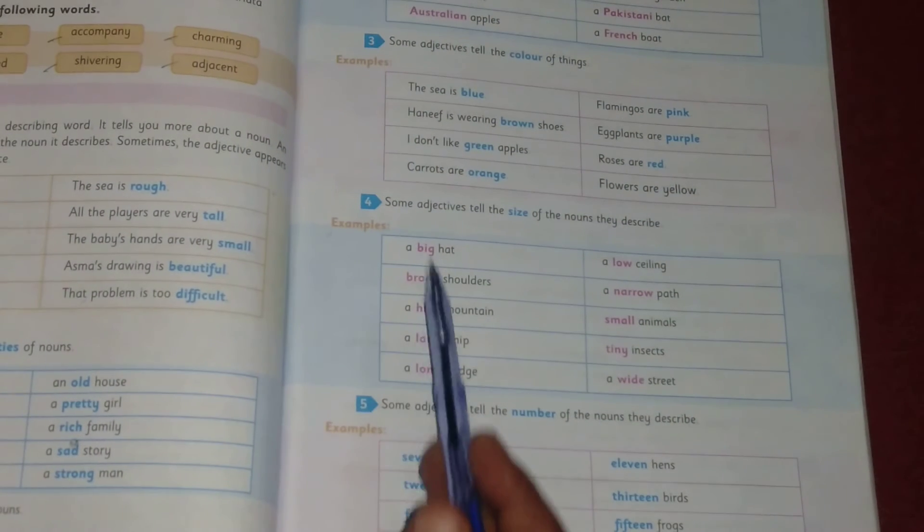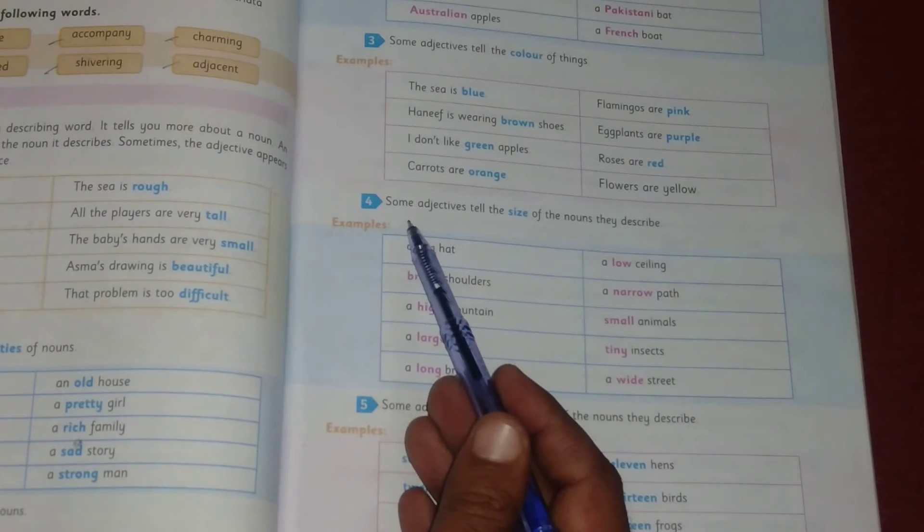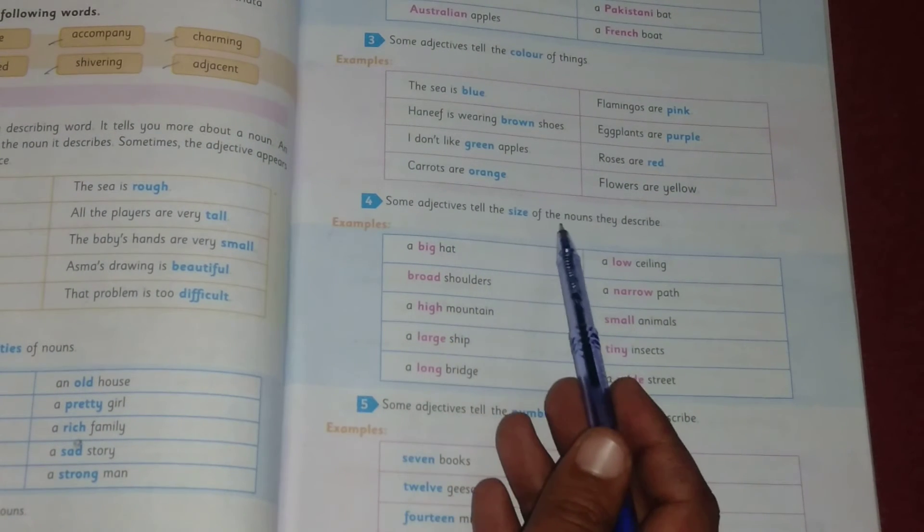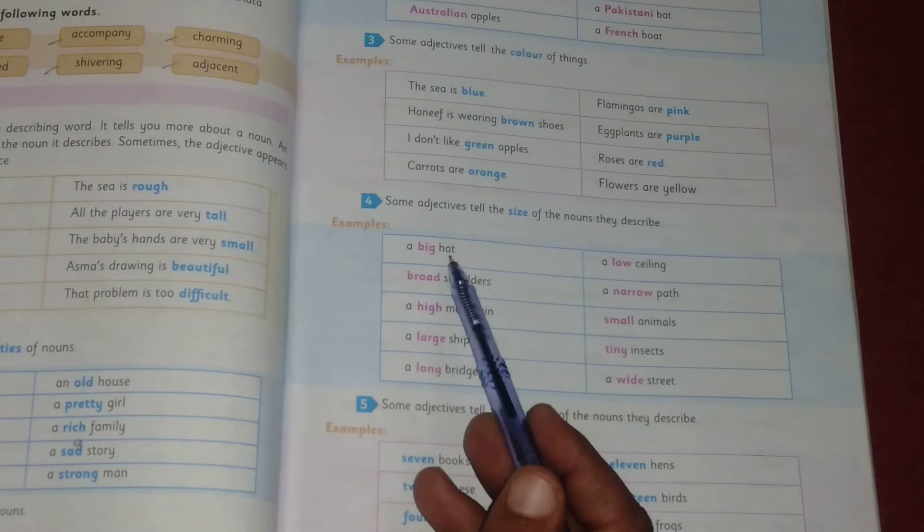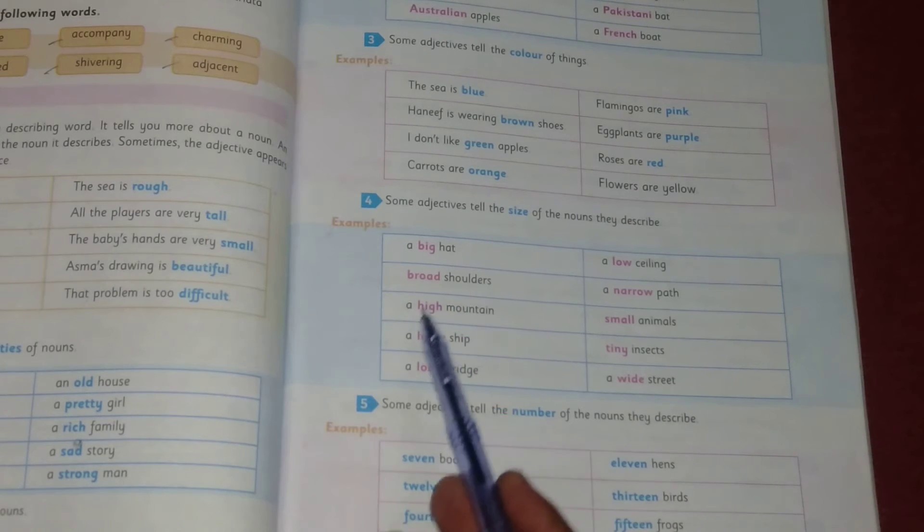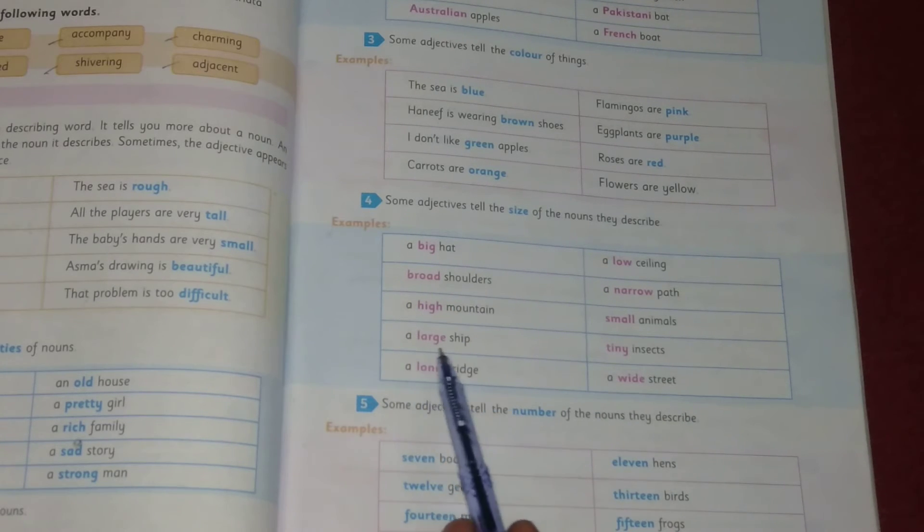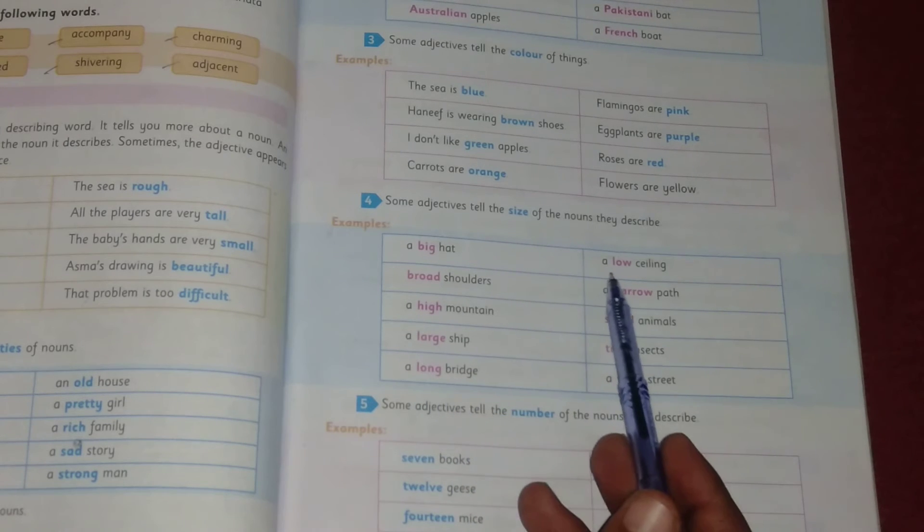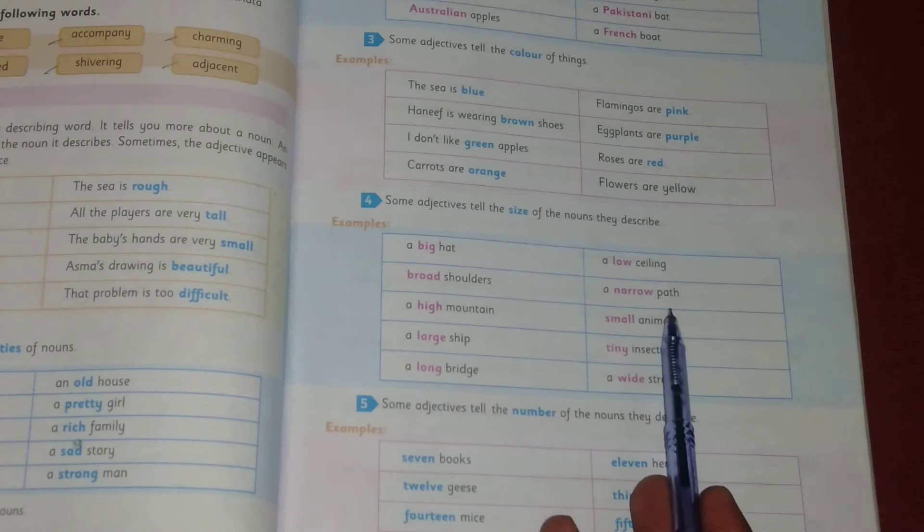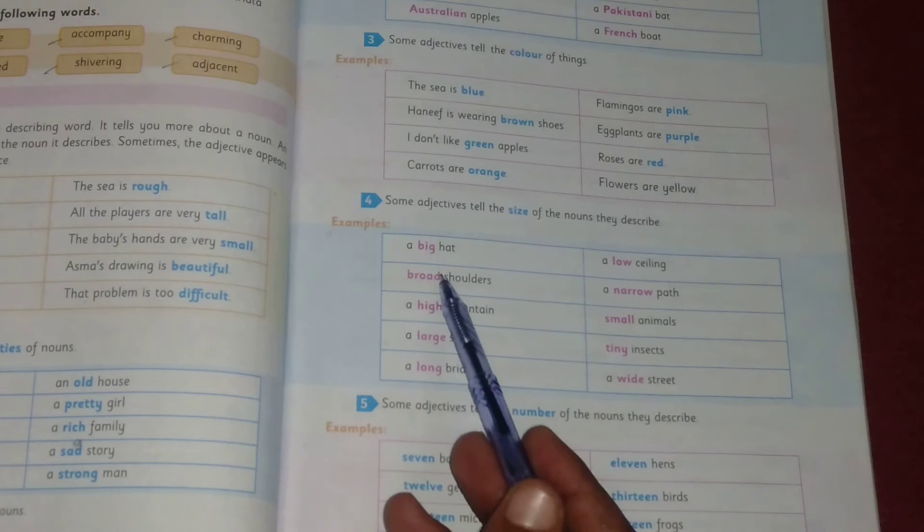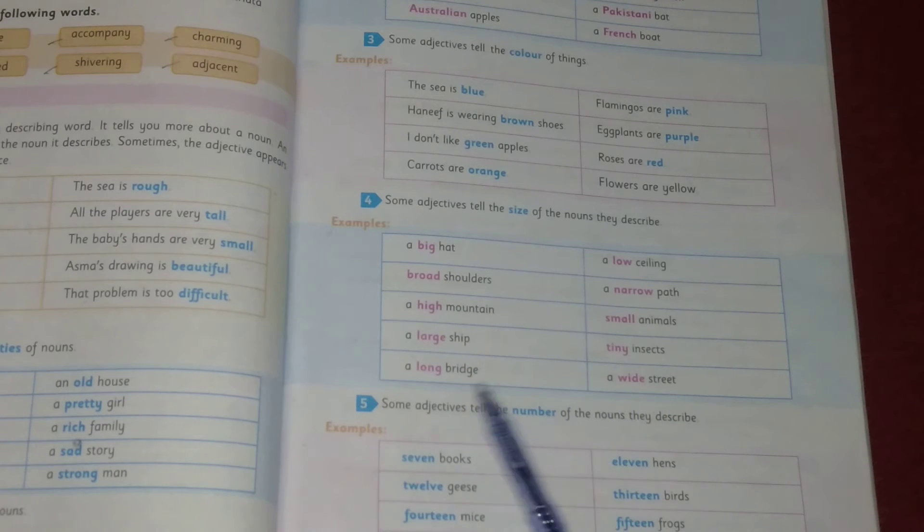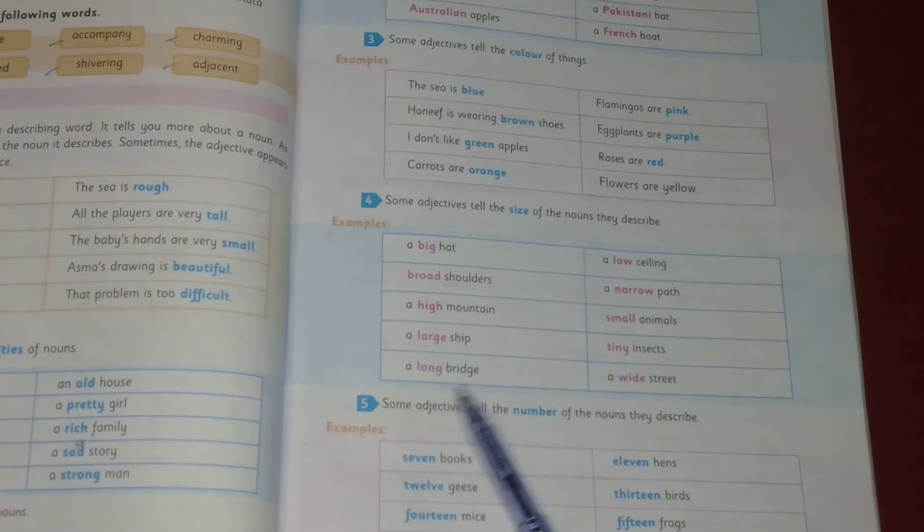Next is number four. Some adjectives tell the size of the nouns they describe. Some adjectives tell about the size of a noun. A big head, broad shoulders, a high mountain, a large ship, a long bridge, a low ceiling, a narrow path, small animals, tiny insects, a wide street. These are adjectives of size. It tells about the size of the nouns.